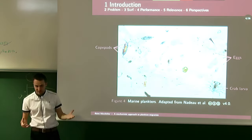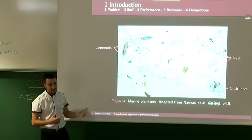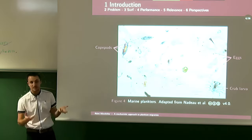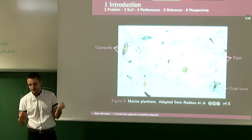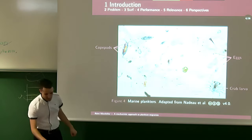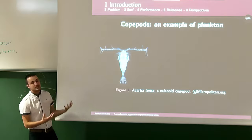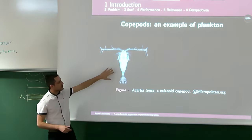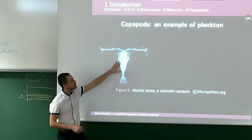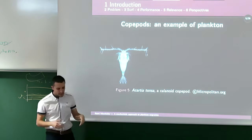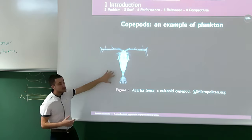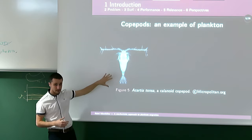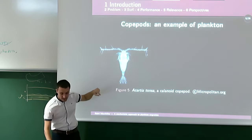Copepods are very interesting due to their abundance and diversity — they are sometimes called the insects of the sea. Let's focus on a copepod as a typical example of a planktonic organism. They have a body, a tail, and antennae. Because we want to understand their behavior, we're particularly interested in their sensing capabilities.